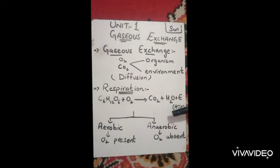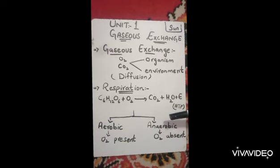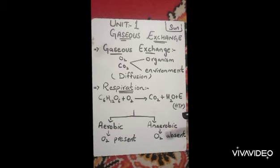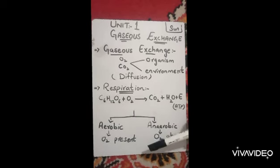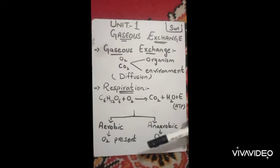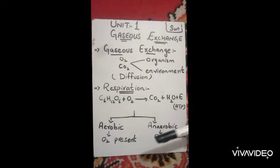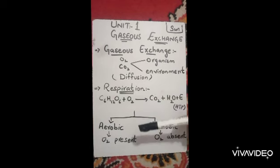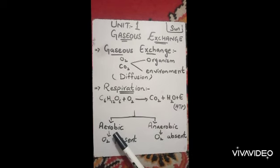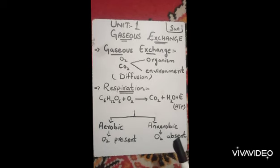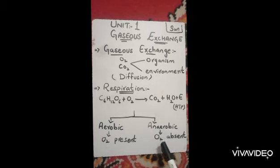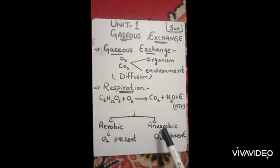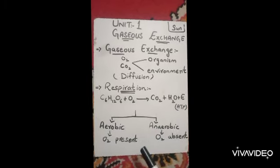Respiration is of two types. The first one is called aerobic respiration and the second one is called anaerobic respiration. Aerobic respiration occurs in the presence of oxygen — when oxygen is present and food molecules are present, it is called aerobic respiration. But in the absence of oxygen, the process is called anaerobic respiration.